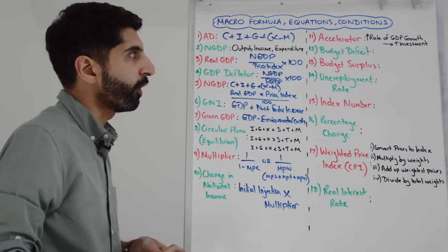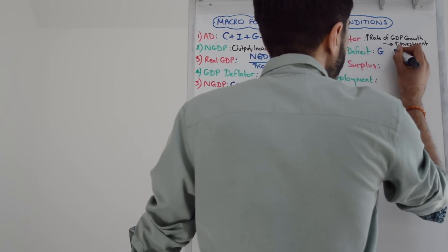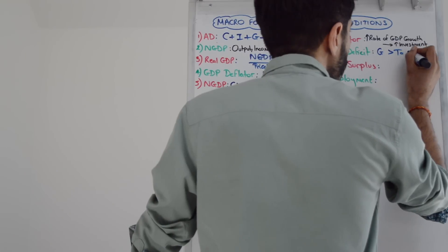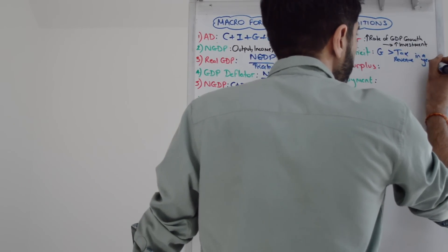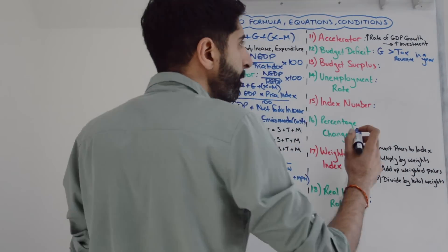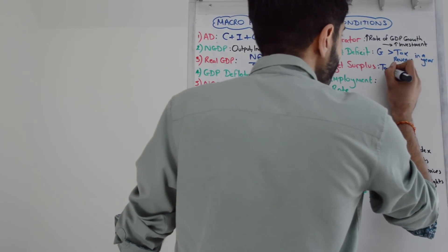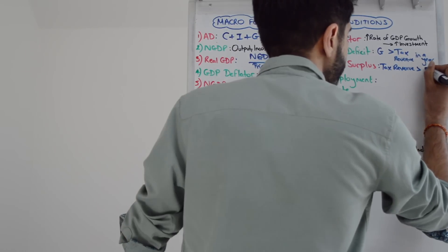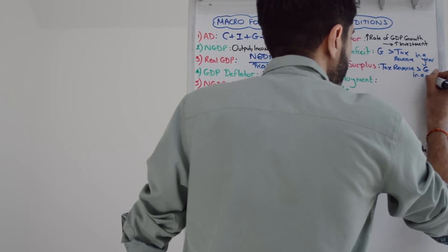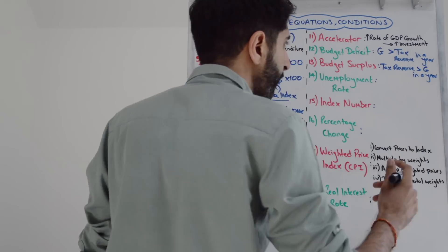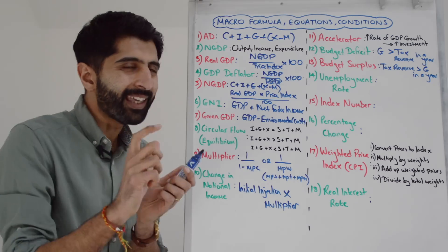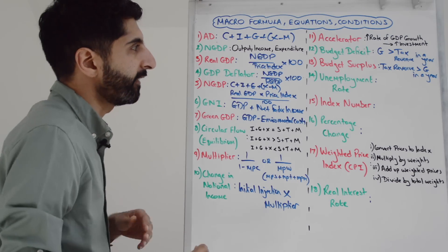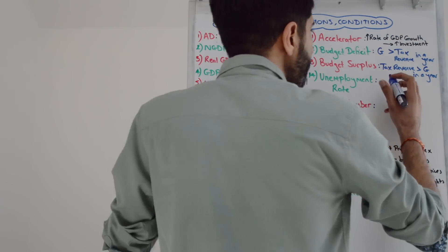The budget deficit occurs when government spending is greater than tax revenue, but crucially here in a year - in a fiscal year. That time frame is very important. A budget surplus is when tax revenue is greater than government spending, but again in a year. Budget deficit would be annual government borrowing.